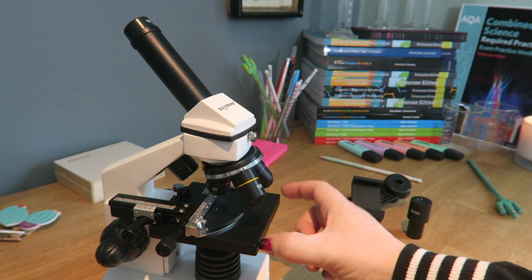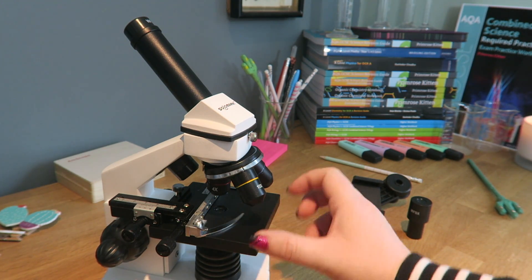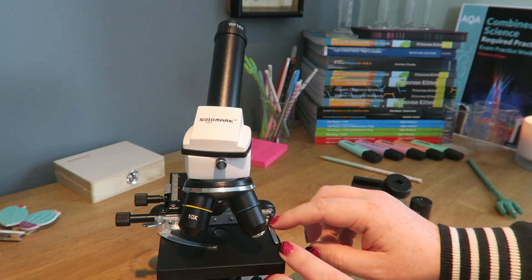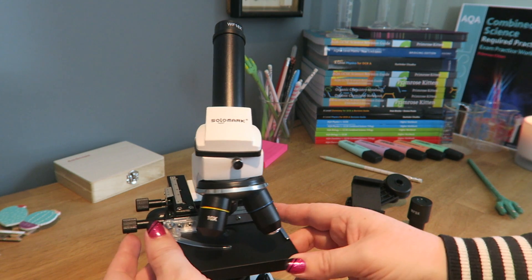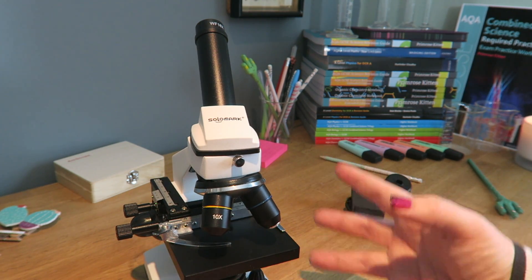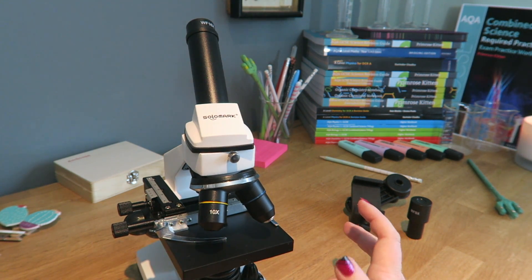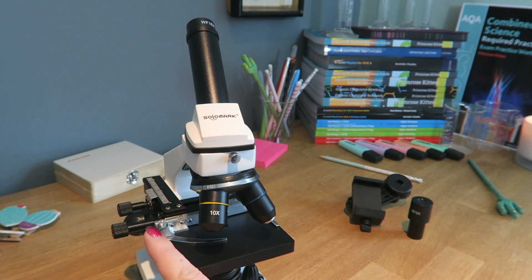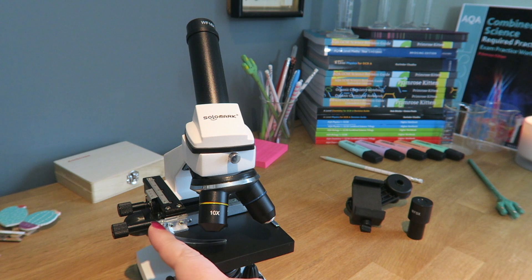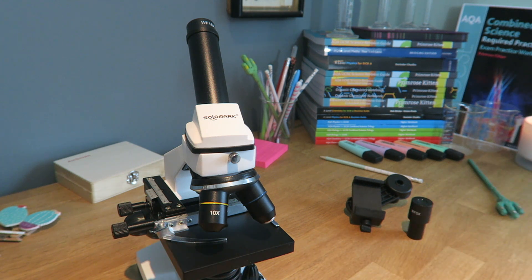You'll put your slides on this bit here. This is the stage. And you can see that there's this metal bar here, and this metal bar here that moves. That is to keep your slide in place. There is nothing more frustrating than trying to do your required practical, drawing the section that you are looking at, and then your slide moves, and you've lost what you were looking at.